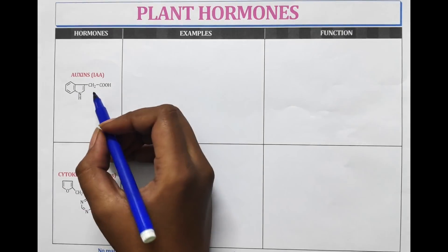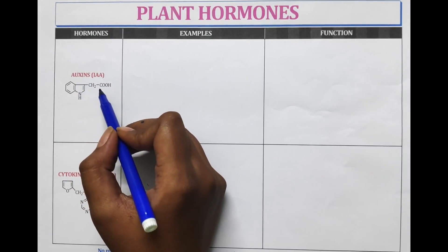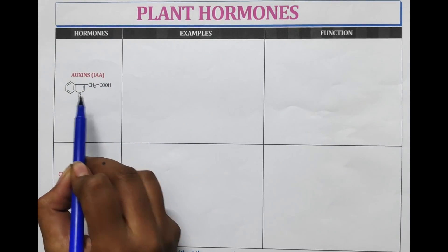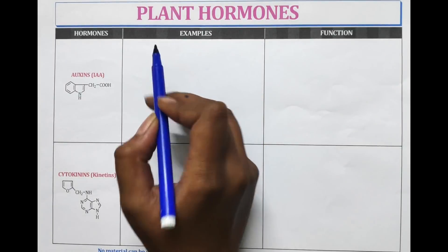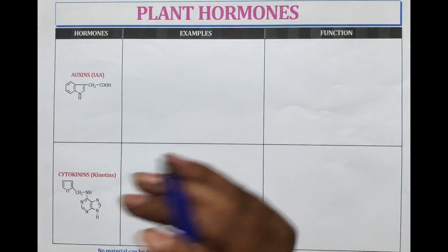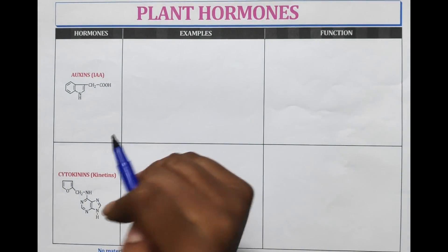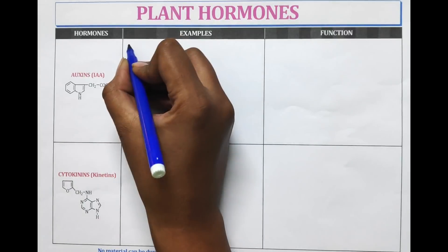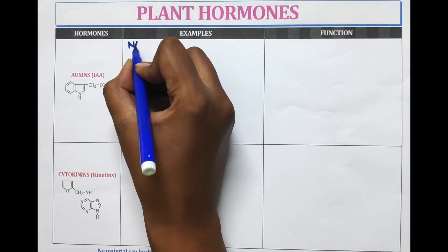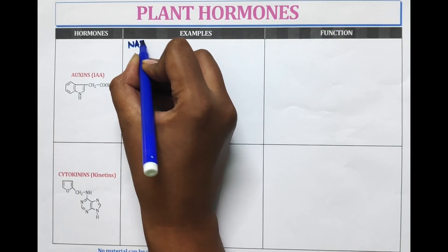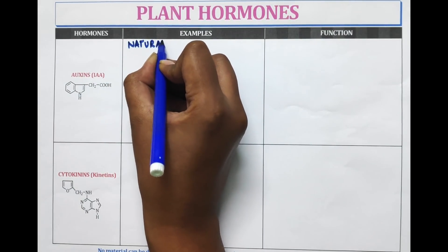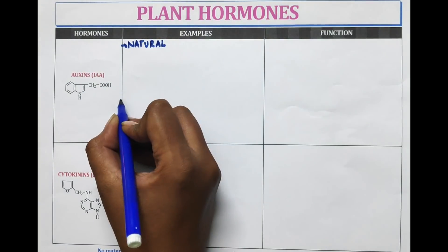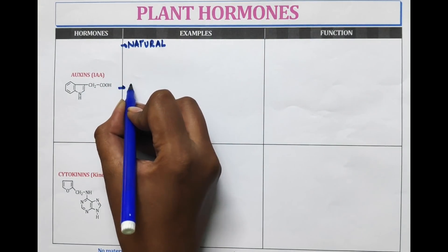The first hormone is auxin. This is the structure of auxin. Auxin is of two types: natural and synthetic.